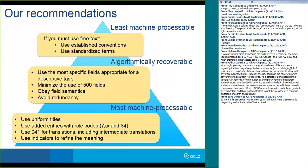We have a question from Judith: What might you say to educators at graduate levels of library science regarding the teaching of organization and control, also known as cataloging? Most schools have stopped teaching metadata structure with any effectiveness, if at all. Doesn't this decrease the ease with which we can convert linked data from MARC records? As a cataloger I'm encountering terrible MARC records, often provided by third-party vendors that library administrators have decided to buy into, as well as a lack of well-educated human resources to correct or edit these records into current standards. What is OCLC Research doing to reach these educators and administrators to get the message of a changing landscape of search and retrieval?